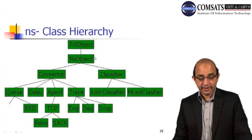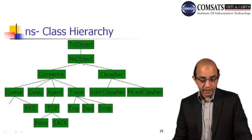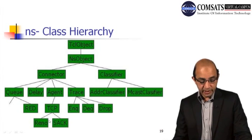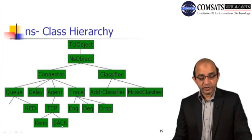Here is the class hierarchy. We have TCL object, NS object, connector, classifier, queue, delay, agent, and trace. There are also address classifier, multicast classifier, and RED queue. The agents include TCP agent, with variants NewReno, DQ, Drop, Reno, and SAC — these are different versions of TCP, the Transmission Control Protocol.